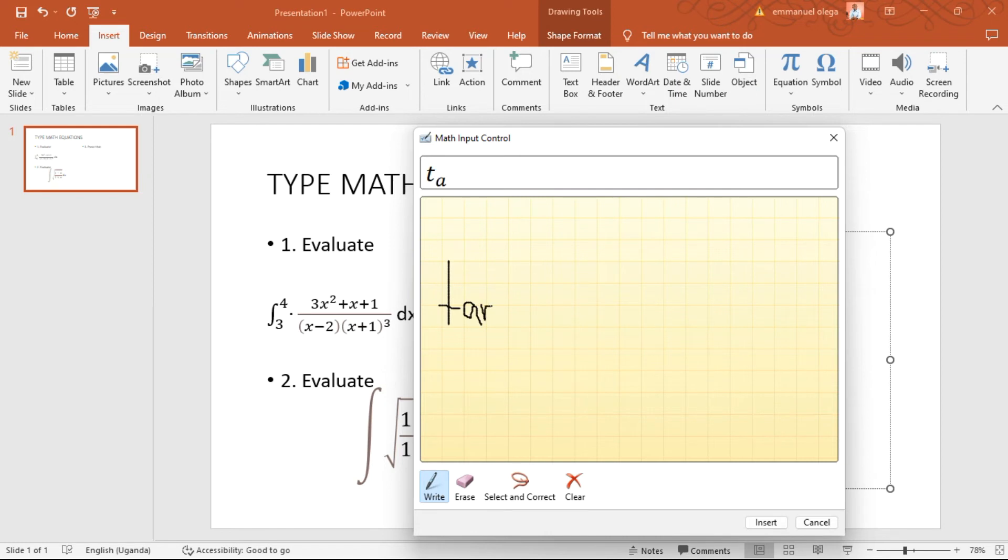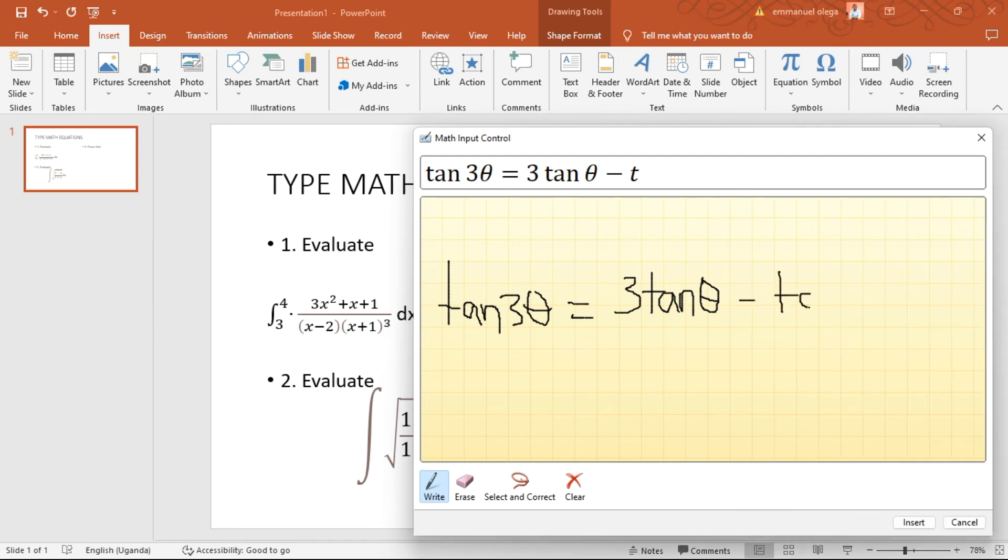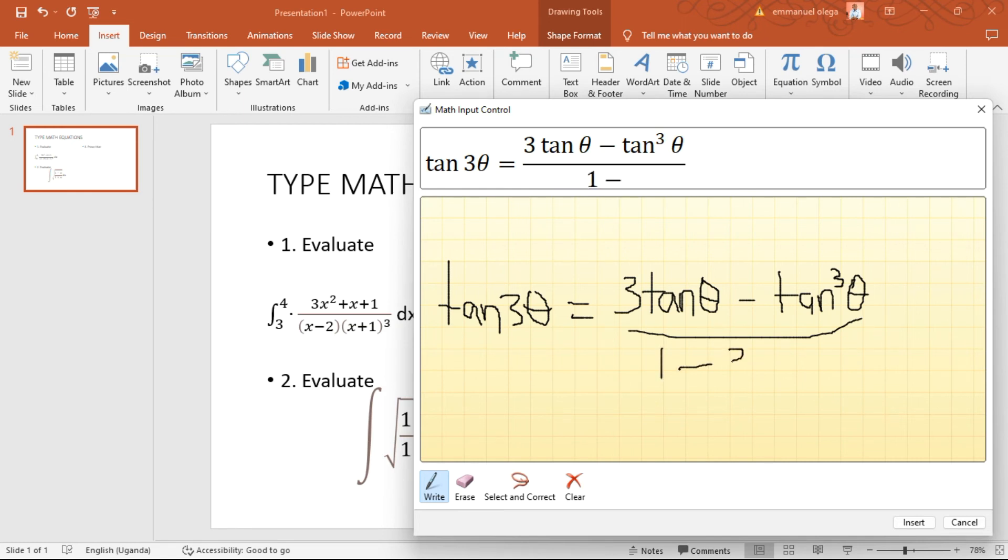Tan 3θ equals 3 tan θ minus tan cubed θ over 1 minus 3 tan squared θ. All right, looking good.